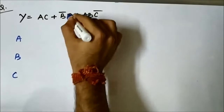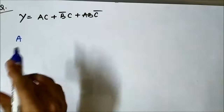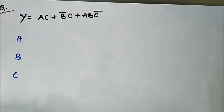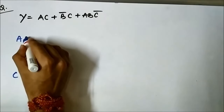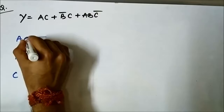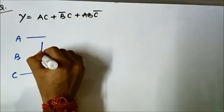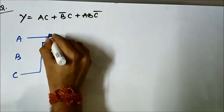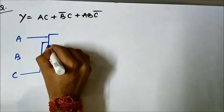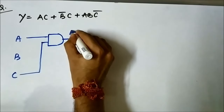We will target each term separately, try to get each term individually, and then combine them together. For the first term, A AND C: we will give A and C to a two-input AND gate to get AC.